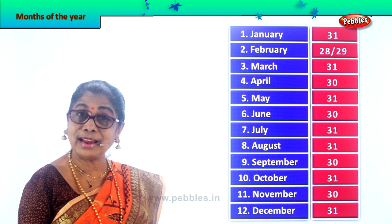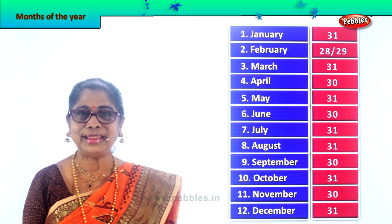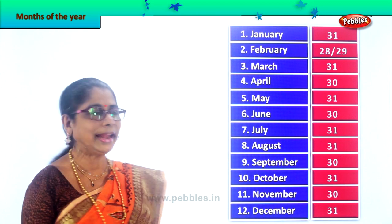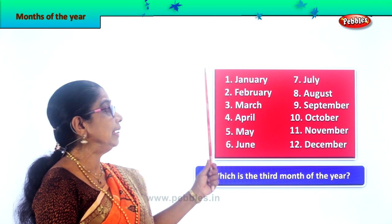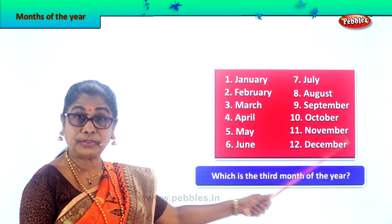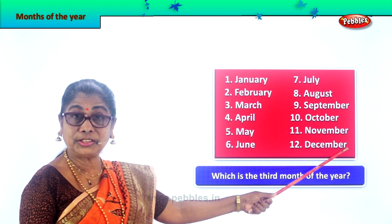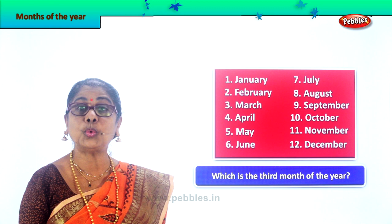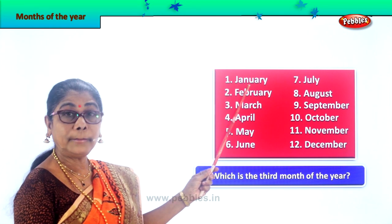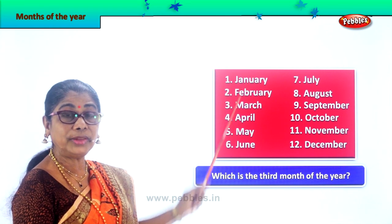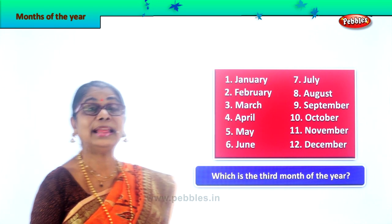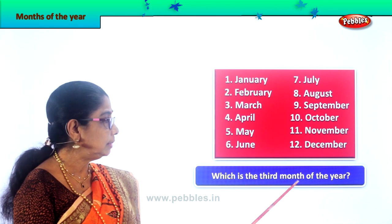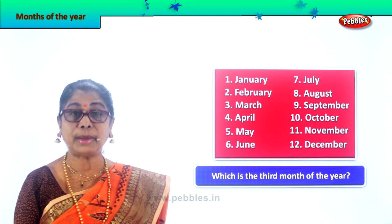So you have now learned the number of days for every month of the year. Did you enjoy, children? Now look at the names of the months of the year — we have 1 to 12 here and there is a question for you to answer. We have the months in a year, January right up to December, all 12 months. Let us read the question together: Which is the third month of the year?